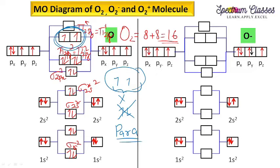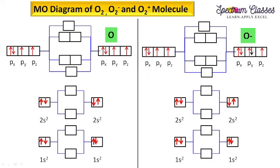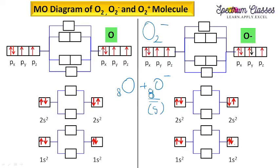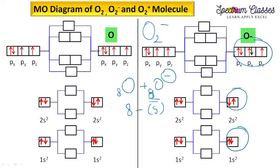Coming to O2 minus. O2 minus means oxygen 8 plus oxygen with an additional electron — that is 9 electrons on one side. Minus means 1 electron coming from outside. So in total, 8 plus 9 equals 17 electrons. I need to fill 17 electrons in the O2 minus molecule.